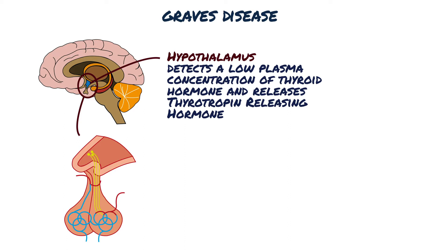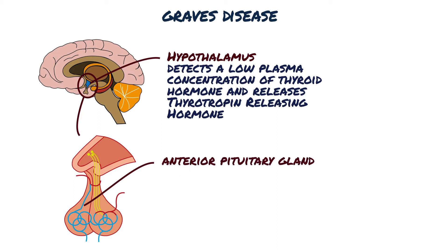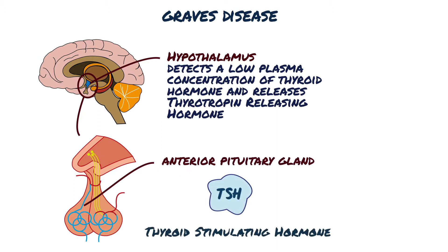TRH binds to receptors found on thyrotropic cells of the anterior pituitary gland, causing them to release thyroid-stimulating hormone, TSH, into the systemic circulation.